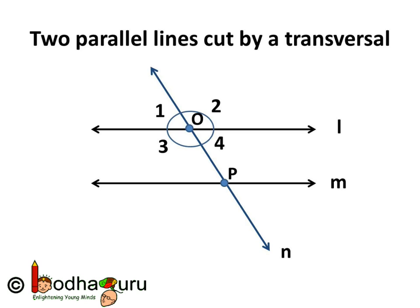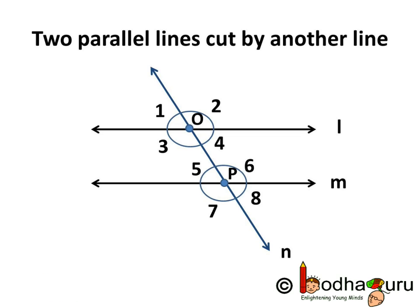Here L and M are two parallel lines and line N is the transversal. So let's denote all the angles. At point O, the four angles are 1, 2, 3, 4. Same way, four angles are formed at point P where transversal N intersects with line M. Let's denote them as angle 5, 6, 7 and 8.